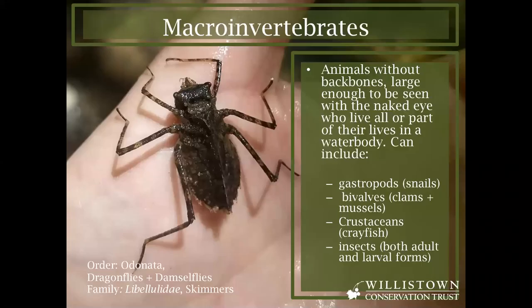So what is a macroinvertebrate? It's just an animal without a backbone that's big enough to be seen with your naked eye, and they live all or part of their lives in a water body, which could be a stream or a pond or a lake. It includes things like gastropods — which are snails — bivalves, which are clams and mussels, crustaceans like crayfish, and any kind of insects, which can be both their adult and larval form. This insect on the screen is actually a larval dragonfly, which is pretty crazy — it doesn't look at all what we think of a dragonfly to be. But in their larval form, when they live in the stream, dragonflies are apex predators, and they're really important in our food web.